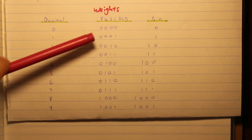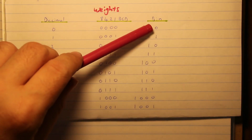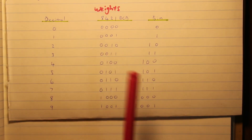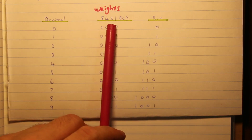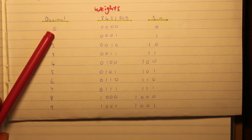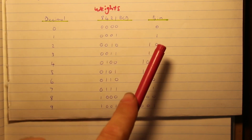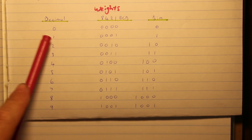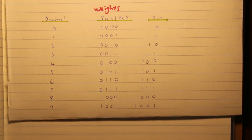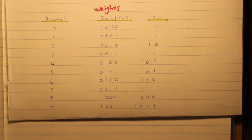Don't get confused — this is definitely not hexadecimal. The binary number system also goes from zero to nine here, but it looks slightly different. The numbers 8, 4, 2, 1 are what we call the weights of the code. For the number zero, we write it in 8421 BCD as 0000, and in binary it would just be zero. The number one would be 0001, and in binary just one. We use these weights to find out what the code is in 8421.